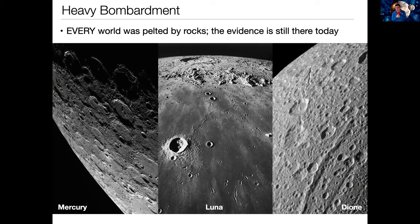Over here on the right is Saturn's moon Dione, which also has a very heavily cratered surface. These are all worlds without atmospheres, so the craters, when they form, persist over millions if not billions of years — and that is our evidence for there being an early, very heavy period of bombardment in the solar system. A careful person might ask: how do we know all those craters formed in the early solar system? The way we do that is we look at the craters, count them, and organize them by size — kind of like taxonomy, binning them up into big, medium, small, and tiny ones.